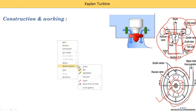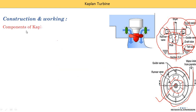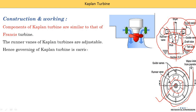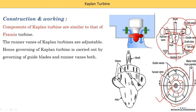The components of Kaplan turbines are similar to those of the Francis turbine. The runner vanes of the Kaplan turbine are adjustable. Hence, governing of the Kaplan turbine is carried out by governing the guide blade as well as the runner vane angle both. In the Kaplan turbine, the angle of these runner vanes is adjustable — the vanes are mounted on a hub that has a hollow component, and the vane angle is controlled by a servo motor mechanism. The guide vane angle is also changed, so governing uses these two methods: adjusting the guide vanes as well as adjusting the runner vane angle.